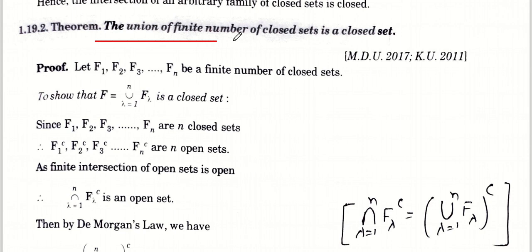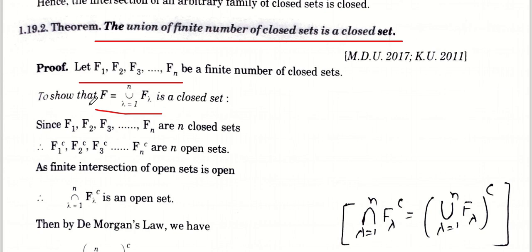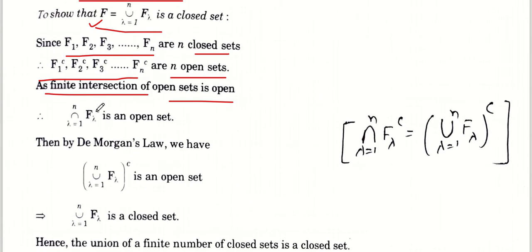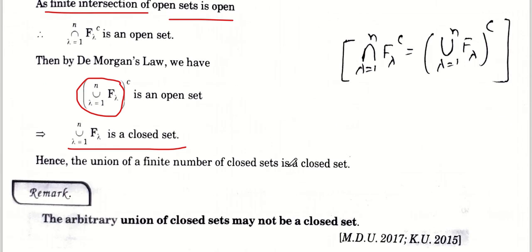Theorem: Union of finite number of closed sets is closed. मान लो F1, F2, ..., Fn closed sets हैं और F = F1 ∪ F2 ∪ ... ∪ Fn। Prove करना है कि F closed है। क्योंकि F1, F2, ..., Fn closed हैं, इनका complement open होगा। Finite intersection of open sets open होती है, तो F1^c ∩ F2^c ∩ ... ∩ Fn^c open है। De Morgan's law से complement पूरे पर लगाने पर intersection union बन जाती है, तो F^c open है, इसलिए F closed है।